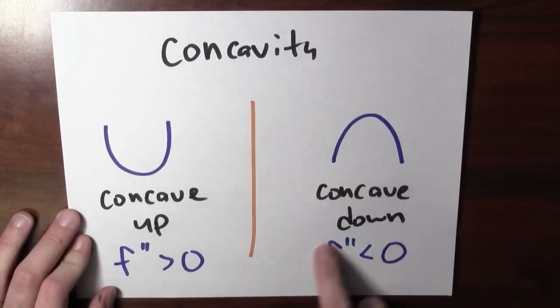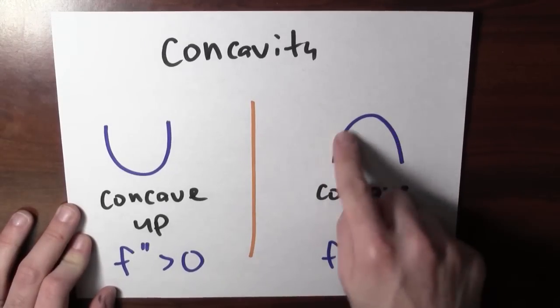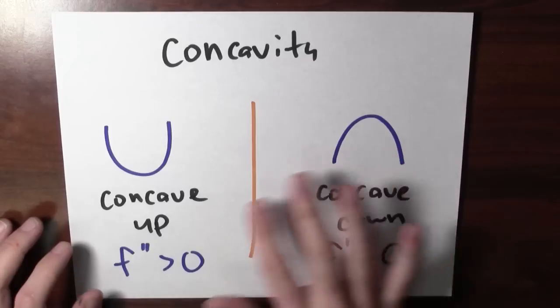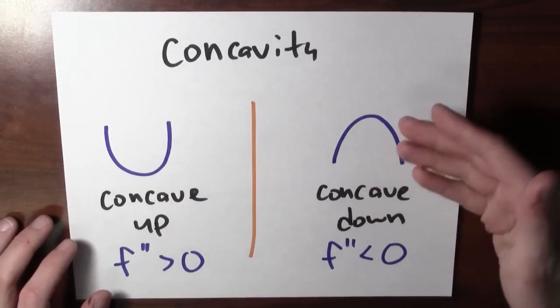Negative second derivative makes the graph look like this. And I'm just labeling these two things, concave up and concave down.